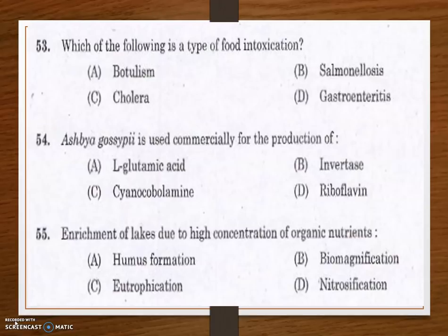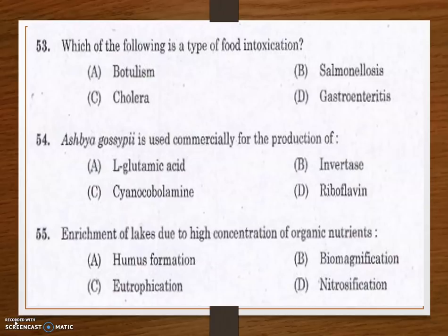Next question: Ashbya gossypii is used commercially for the production of — options are L-glutamic acid, invertase, cyanocobalamin, and riboflavin. The answer is riboflavin. Ashbya gossypii is a natural overproducer of riboflavin (vitamin B2) and is used in industrial-scale production of riboflavin.